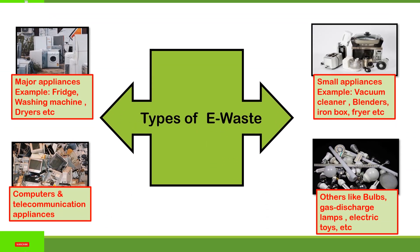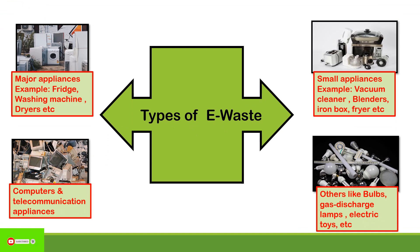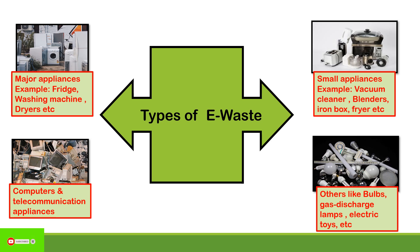There are four categories of e-waste types. First, major appliances like fridges and washing machines — when damaged, these come under major appliances e-waste. Second, small appliances like vacuum cleaners and blenders. Third, the main category: computers and telecommunication appliances. And fourth, bulbs and gas discharge lamps — all are types of e-waste.